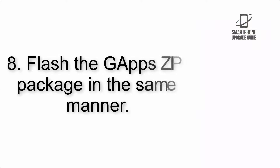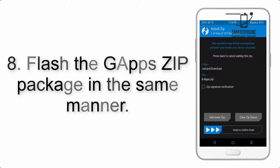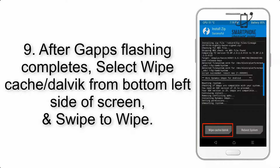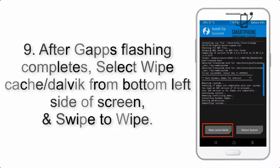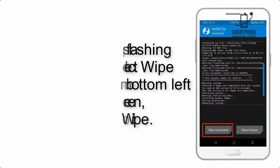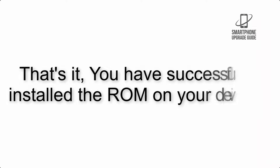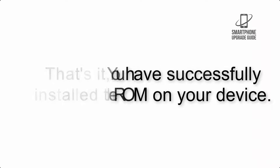Step 7: Swipe the button on the screen to install the ROM file. Step 8: Flash the GApps zip package in the same manner. Step 9: After GApps flashing completes, select Wipe Cache and Dalvik from the bottom left side of the screen and swipe to wipe. Step 10: When the flashing process is complete, hit Reboot System. That's it — you have successfully installed the ROM on your device.